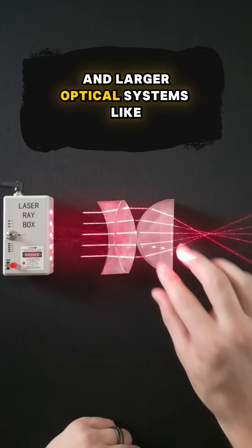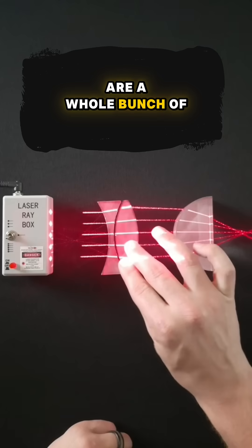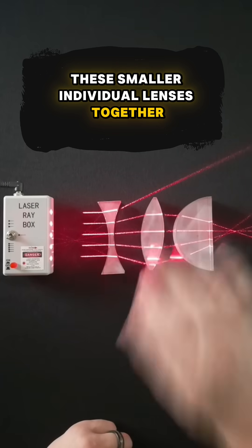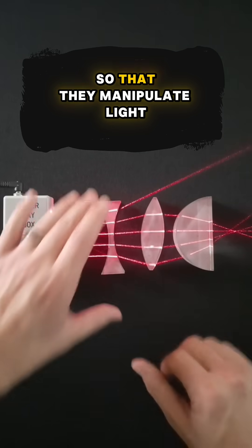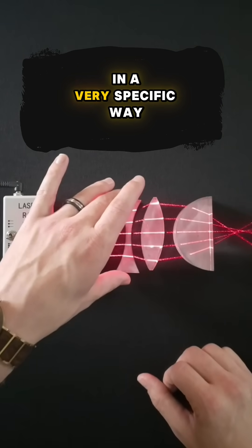And larger optical systems, like the big lens in front of a camera, are a whole bunch of these smaller individual lenses together. So people carefully choose them so that they manipulate light in a very specific way.